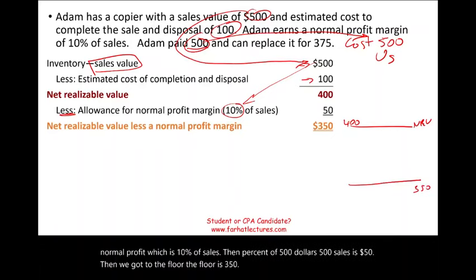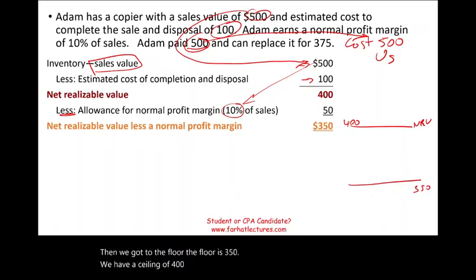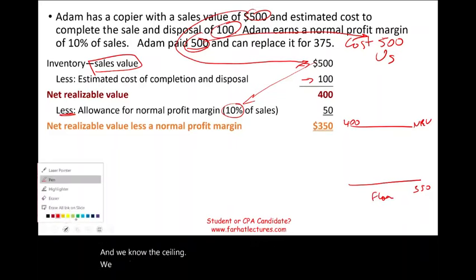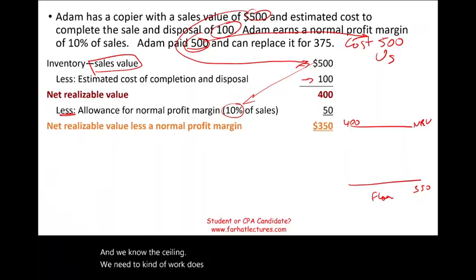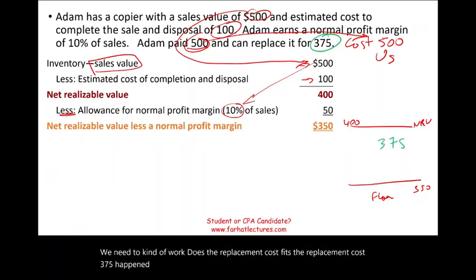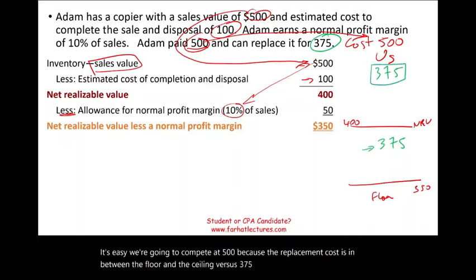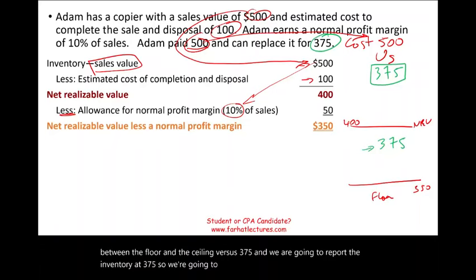Now we need to determine where the replacement cost fits. The replacement cost of $375 falls between the floor and the ceiling. So we compare cost ($500) versus replacement cost ($375), and we report the inventory at $375. That means we take a reduction allowance in our inventory of $125.